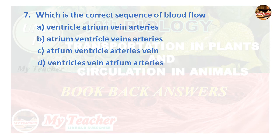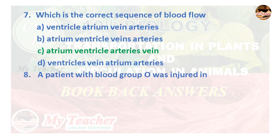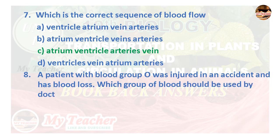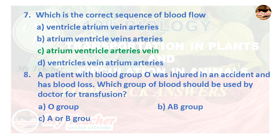Eighth question: A patient with blood group O was injured in an accident and has blood loss. Which group of blood should the doctor use for transfusion? A. O group, B. AB group, C. A or B group, D. All blood groups. Answer is Option A: O group.